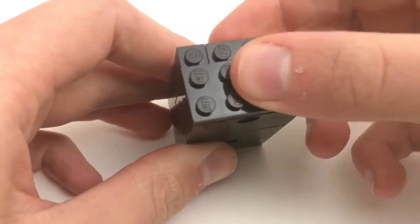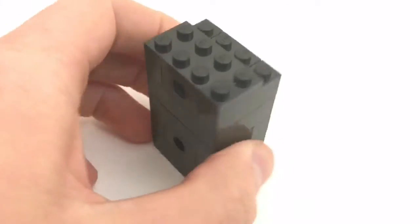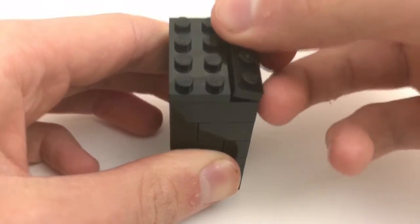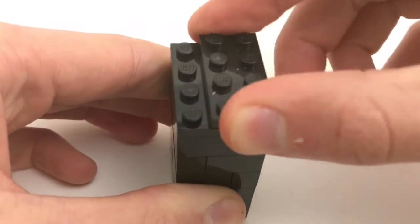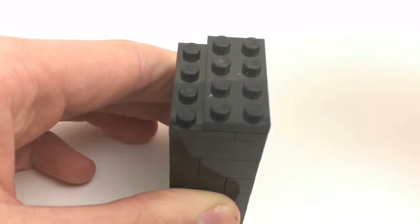On top of all that, place a 2x4 black plate or whatever color you're using to build this stereo, then place a 1x4 behind that, stick a 2x4 plate on top of that, and then stick a 1x4 plate in front of that. Make sure you're following along.